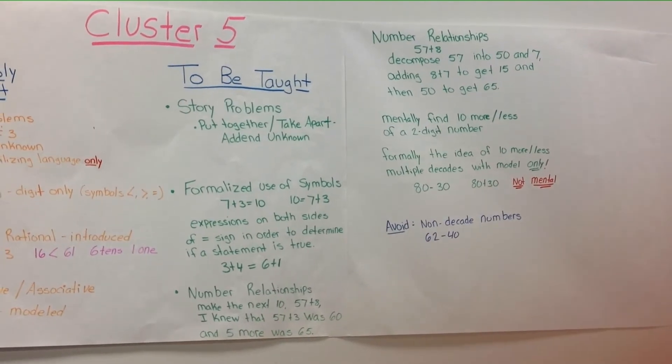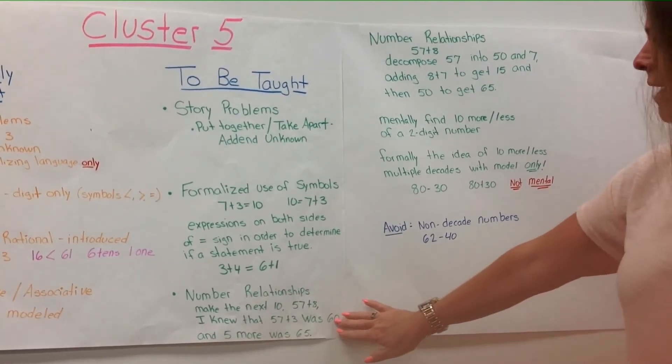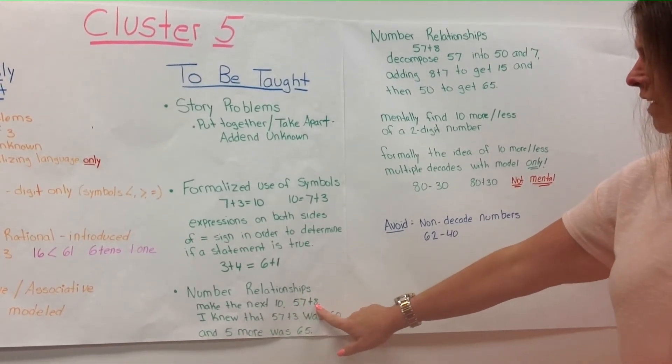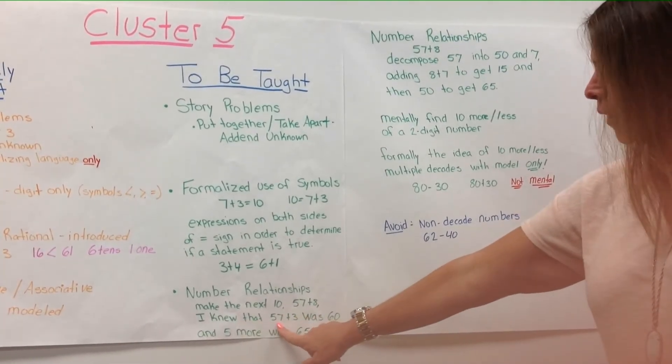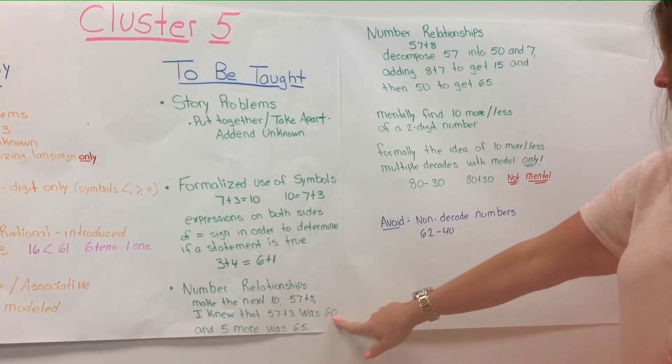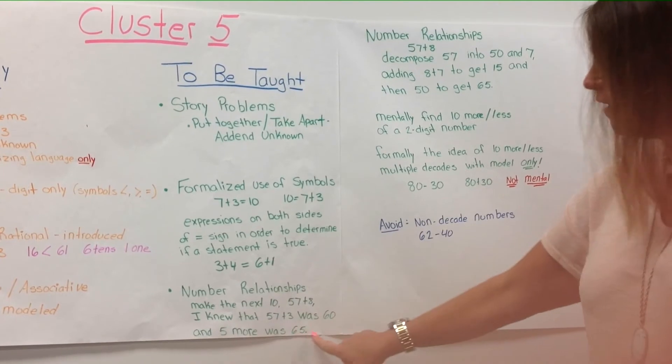Number relationships. Students will now make a 10 with two-digit and one-digit numbers. For example, 57 plus 8. Students will recognize I knew that 57 plus 3 was 60, making our 10, and then adding five more is 65.